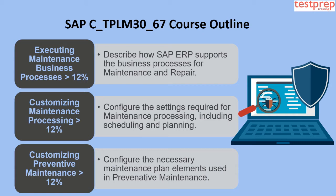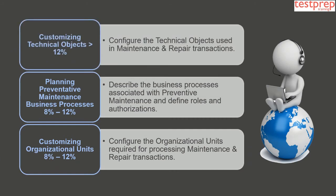Domain 3 is Customizing Preventive Maintenance, comprising more than 12 percent of the exam. It covers configuring the necessary maintenance plan elements used in preventive maintenance. Domain 4 is Customizing Technical Objects, also more than 12 percent, covering configuration of technical objects used in maintenance and repair transactions.